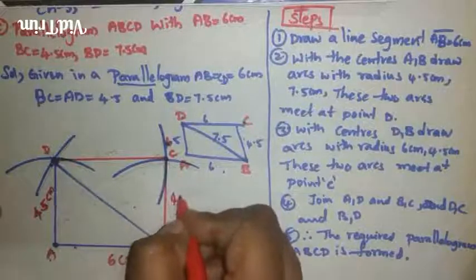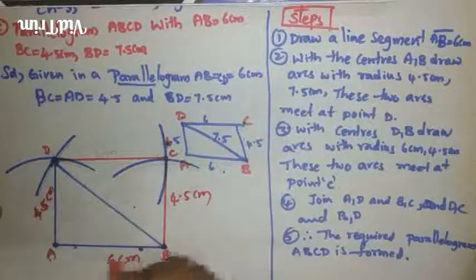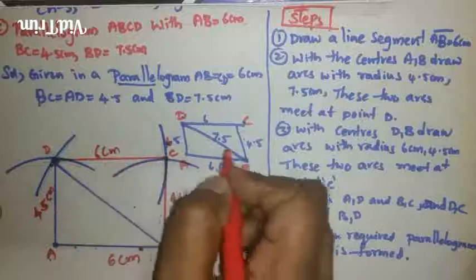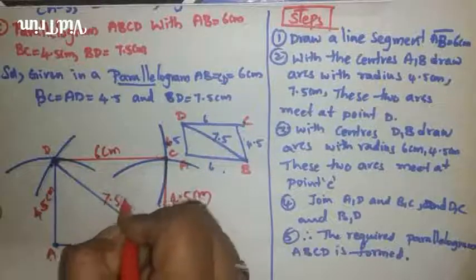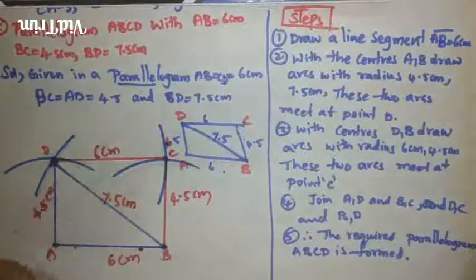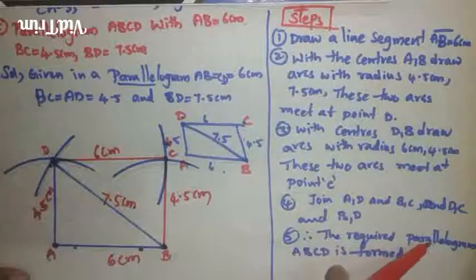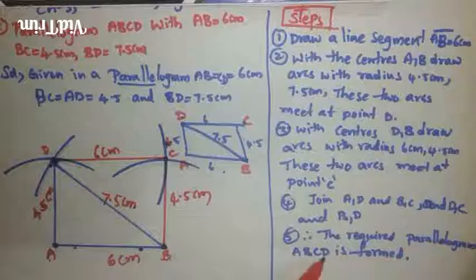BC is 4.5 cm, AB is 6 cm, CD is 6 cm, diagonal is 7.5 cm. Therefore, the required quadrilateral, the required parallelogram ABCD, is formed.